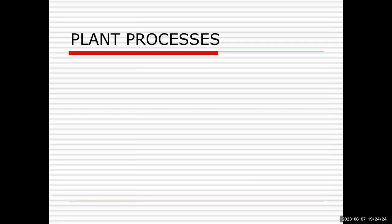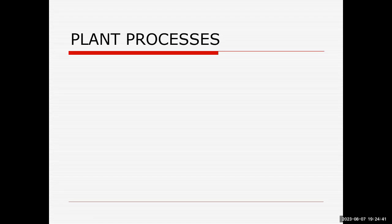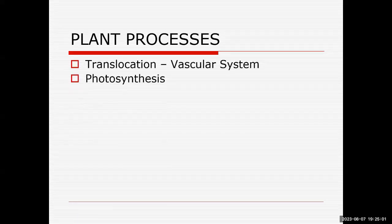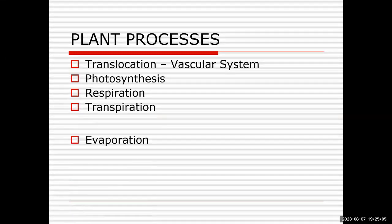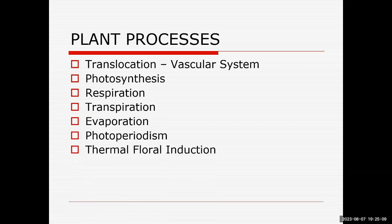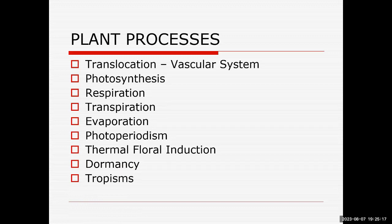That's the end of plant seeds — we've covered that in about 50 minutes. I have about an hour to cover plant processes. The plant processes we'll cover in the next 65 minutes include: translocation in the vascular system, photosynthesis, respiration, transpiration, evaporation, photoperiodism, thermal floral induction, dormancy, and tropisms. Think of plant processes as a review of what we've already covered in plant parts, going into a little more detail on some of them.